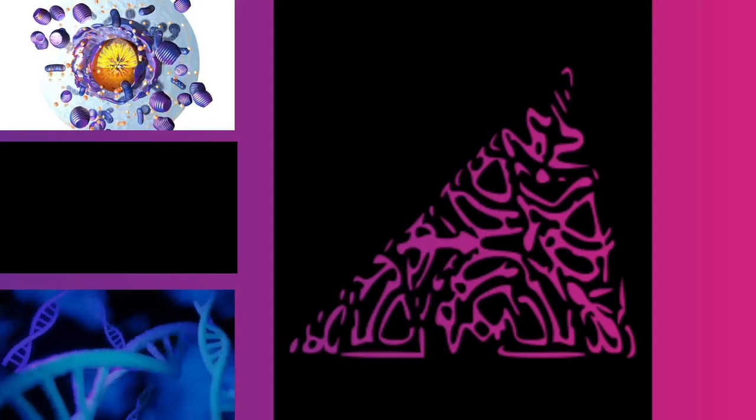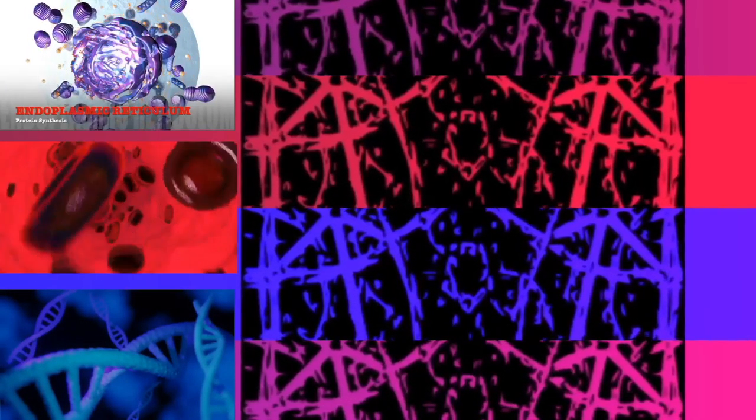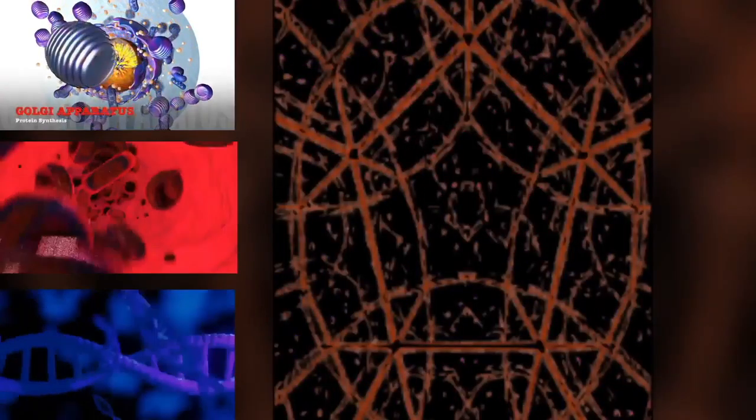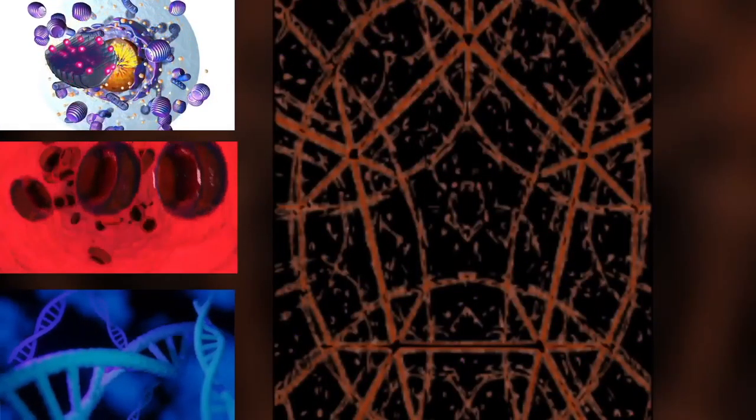During anaphase B, polar microtubules push against each other, causing the cell to elongate. In late anaphase, chromosomes also reach their overall maximal condensation level to help chromosome segregation and the reformation of the nucleus.